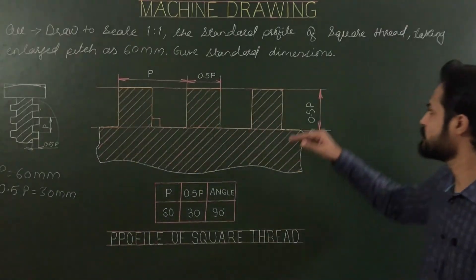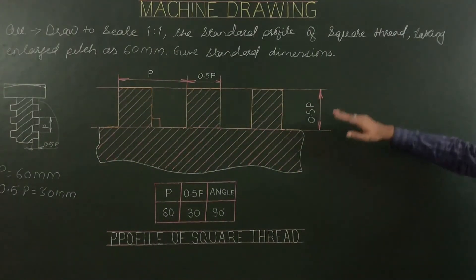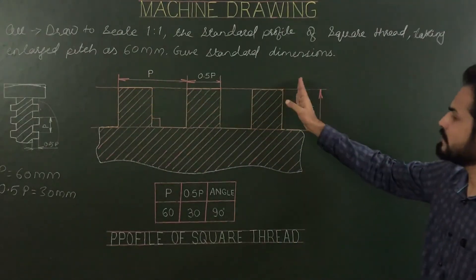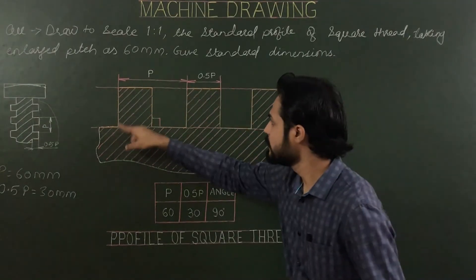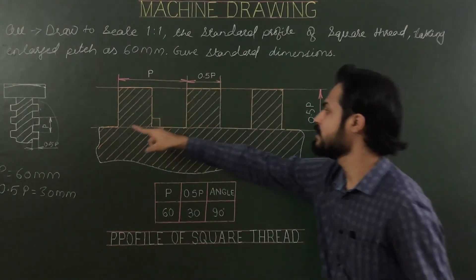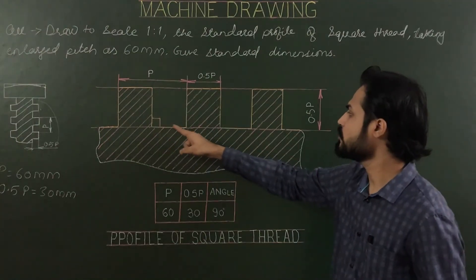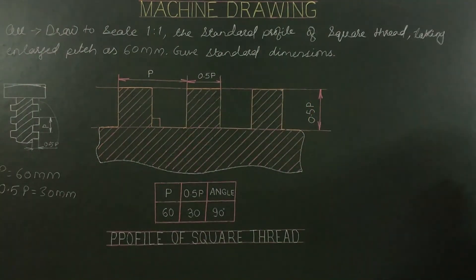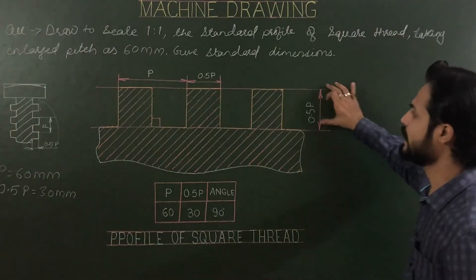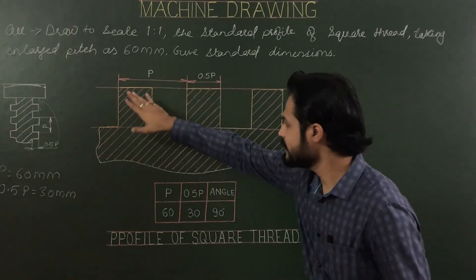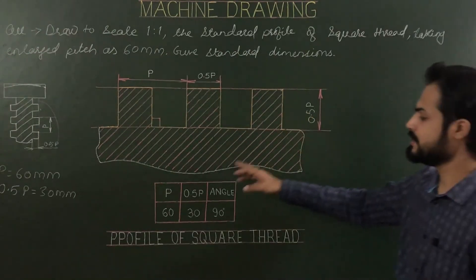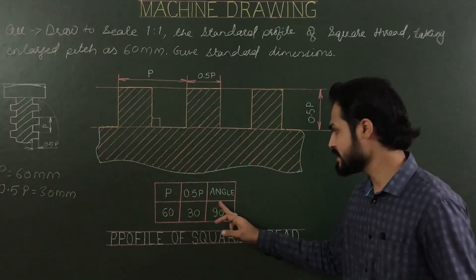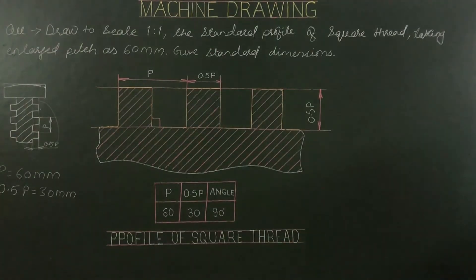To summarize the drawing steps: draw two lines 0.5p apart (half of pitch), then mark limits of 0.5p, draw vertical lines touching crest and root lines, then draw squares of size 0.5p — 0.5p up, 0.5p forward, 0.5p down, 0.5p forward, and so on. Using a short break line, draw the limits of your profile. Show height, pitch, and half of pitch, then hatch the profile. After hatching, draw the dimensioning table showing pitch, half of pitch, angle of thread, and name it as the profile of square thread.